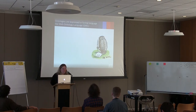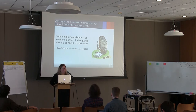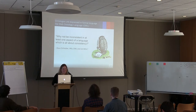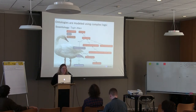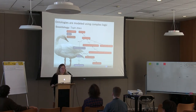Ontologies are expressed in a formal language. One example is the web ontology language, which uses the acronym OWL — not WOL. When asked why, they said: why not be inconsistent in at least one aspect of a language that is all about consistency. Using the OWL language, we can model ontologies using complex logic. This is a reference to a talk yesterday where I discussed an ontology about swans, coined as the swan-tology.